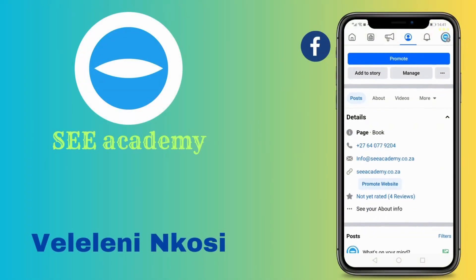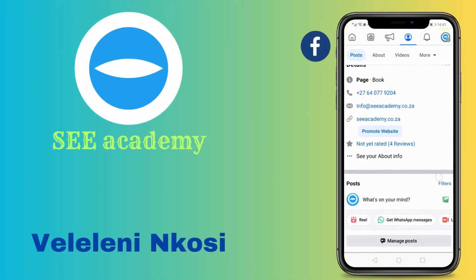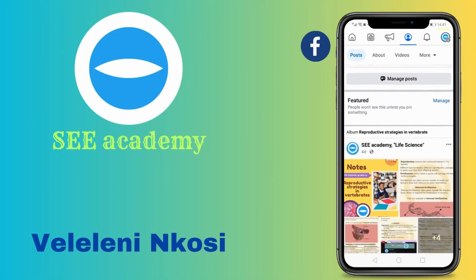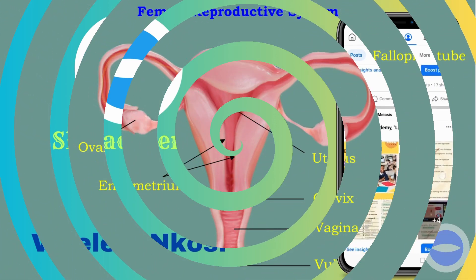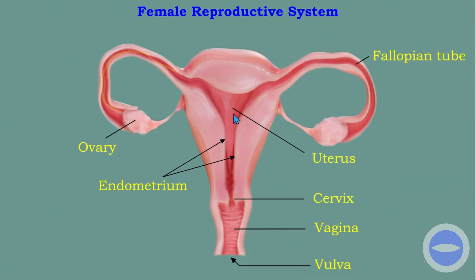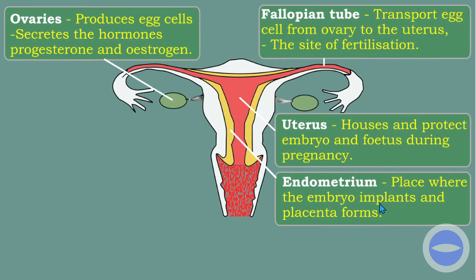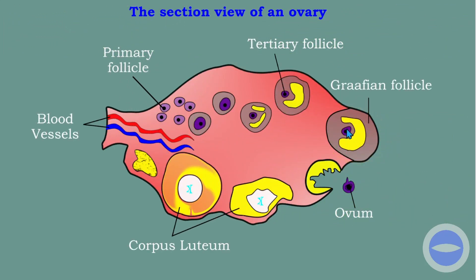Hello everyone. Welcome to C Academy YouTube channel. My name is Velilene Ngozi. In today's lesson we discuss human reproduction. We will be looking at the structure of the female reproductive system and we will also discuss the function of each part in the female reproductive system. Without any further ado, let's get to it.